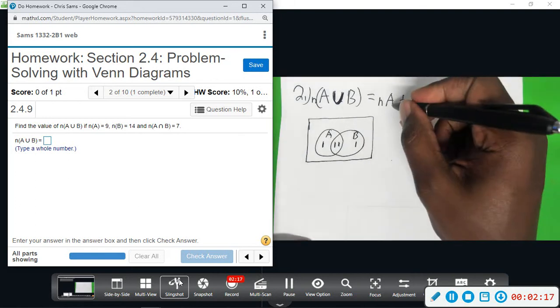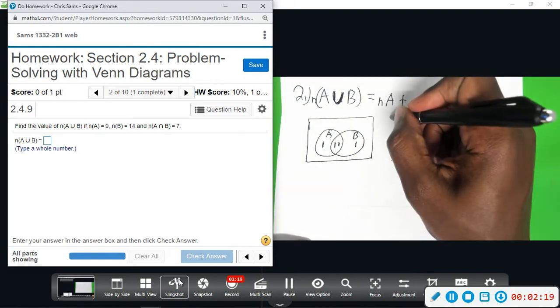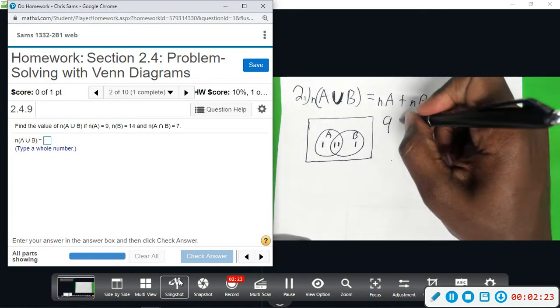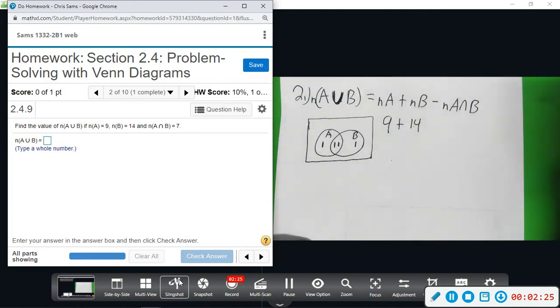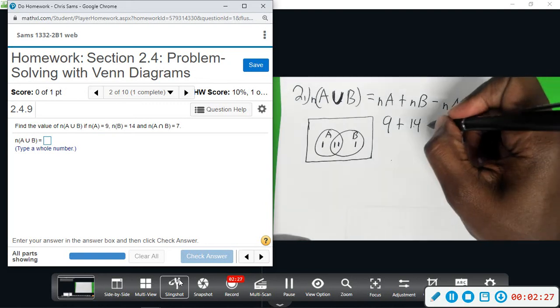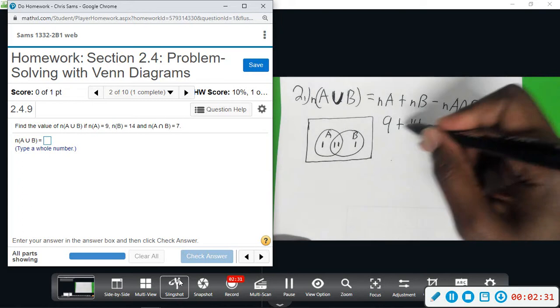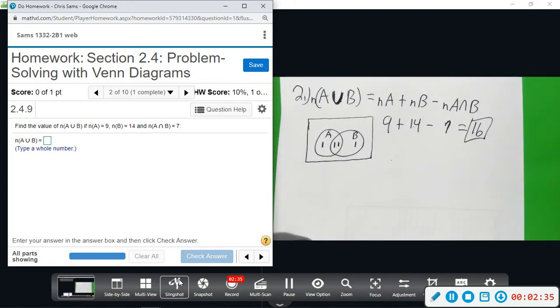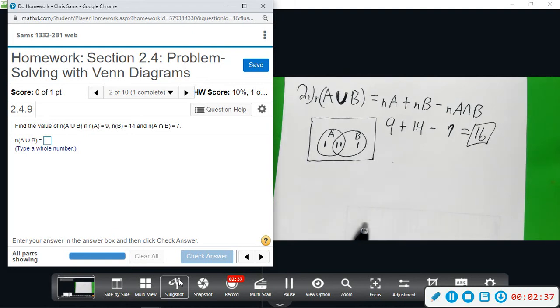number of elements in A, we get nine. Number of elements in B, we get 14. Number of elements in A intersect B is 7. So, when we do this math, we get 16.